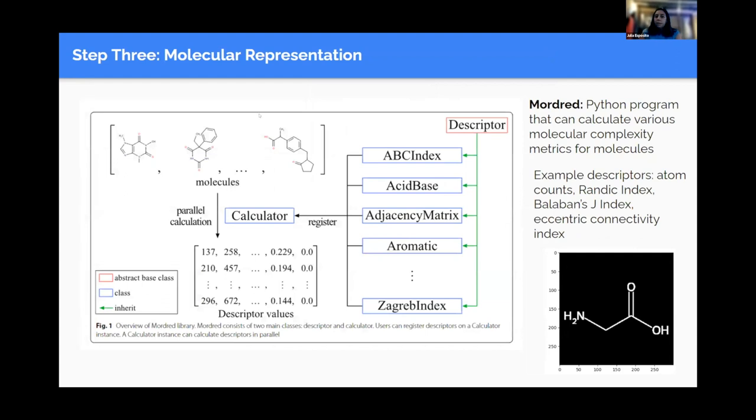Step three, molecular representation. After we were able to come up with all these script complexity metrics to apply to characters, we wanted to find an analog for molecules. We made this code, or we used rdkit, which is a specific package that can take the smiles representation for molecules, and it will spit out this image, a 2D image. And we wanted this so that we could just essentially apply the script complexity metrics we came up with to these images of molecules. But that's not all we want to do. We also want to compare to molecular complexity metrics. We used this other Python program called Mordred. Mordred can actually calculate a ton of molecular complexity metrics for these molecules that depend on the chemistry of the molecules. For example, some of the descriptors in Mordred are things like atom counts, the Randic index, the eccentric conductivity index, and many others.